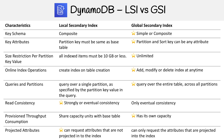Let's reiterate through LSI versus GSI, so we really know the difference between these two and which one is better in each specific aspect. Starting at the top, when we're talking about key schemas, local secondary indexes only have composite — remember, composite is both a partition and sort key. Global secondary indexes support both simple and composite.